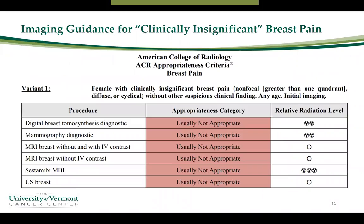So how do we work up breast pain and when do we need to be concerned? The American College of Radiology is a group of expert radiologist physicians who put forth what we call appropriateness criteria — evidence-based guidelines created to assist referring physicians and other providers in making the most appropriate imaging decisions for their patients. These guidelines are created by expert radiology physicians who work together to evaluate all published data on a specific topic such as breast pain.